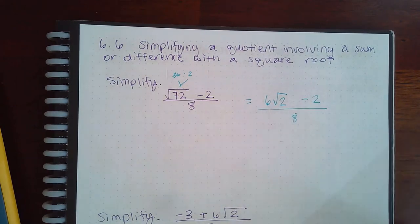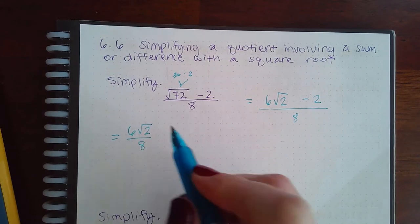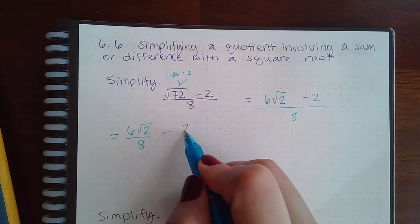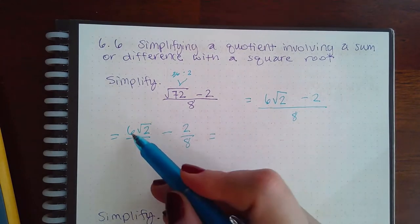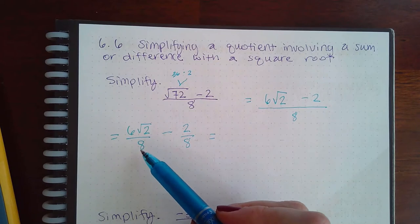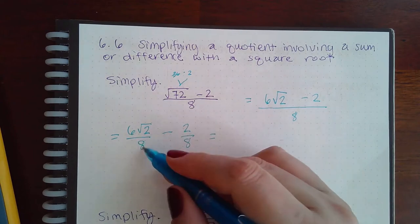We can separate that fraction and say the first term over 8 minus the second term over 8, and then reduce. Remember you can only reduce outsides with outsides, so this number and this number can be reduced. If I reduce them both by 2, I get 3 and 4, and the √2 just stays put.